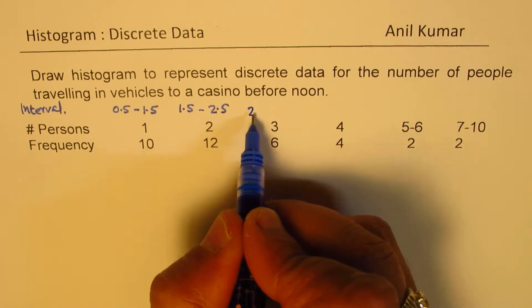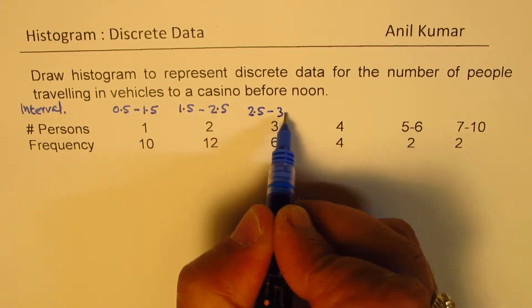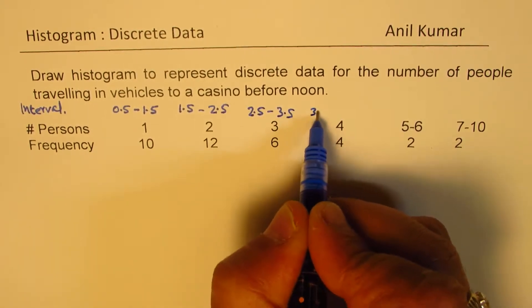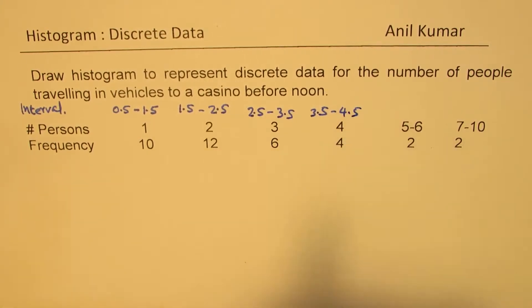Now for 3, 2.5 to 3.5. And for 4, from 3.5 to 4.5. That much is clear.